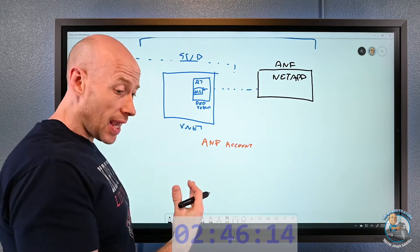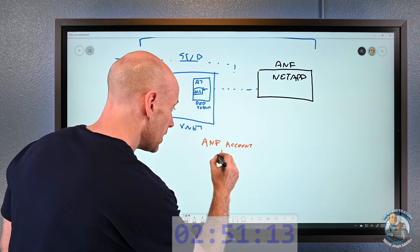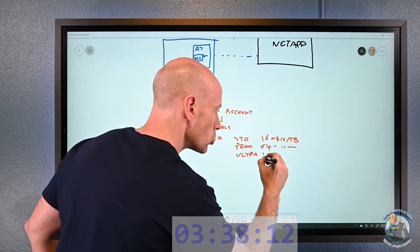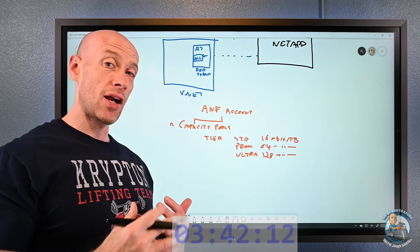Under that Azure NetApp files account, I create one or more capacity pools. That capacity pool has certain characteristics. It has a certain tier. My tier can be standard, premium, or ultra. These really reflect the megabytes per second throughput. If it's standard, I get 16 megabytes per second per terabyte that I provision. If it's premium, I get 64 megabytes per second per terabyte. If it's ultra, 128 megabytes per second per terabyte. If I have 100 terabyte volume, I get 160 megabytes per standard. It scales that way.